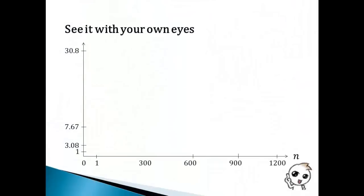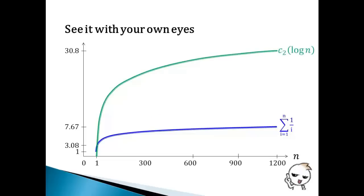Are you believe in our proof? Now see it with your own eyes. This is the curve of the sum of the first n terms of harmonic series, starting from point (1,1). An upper bound c2 log n when c2 is 10. The lower bound c1 log n when c1 is 1. You can see that the sum of the first n terms of harmonic series run in log n envelope. So the sum of the first n terms of harmonic series is big theta log n.